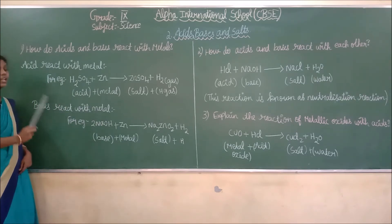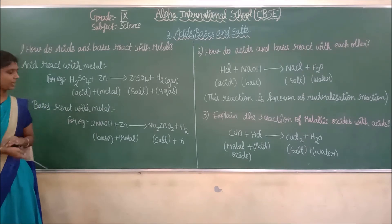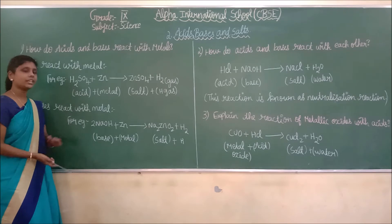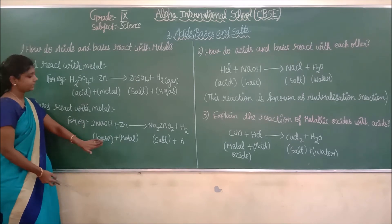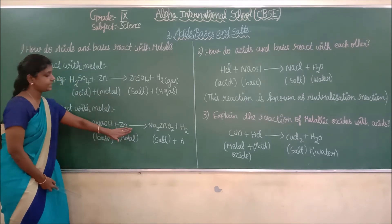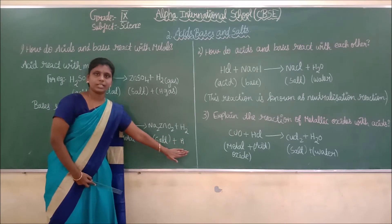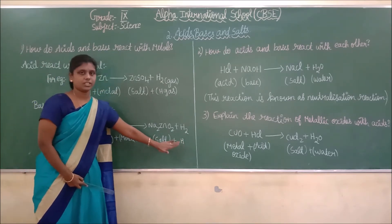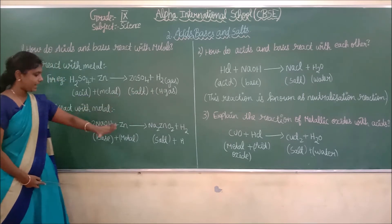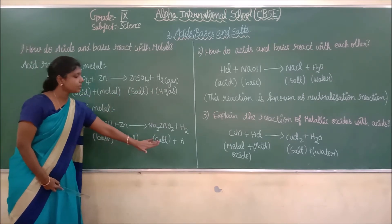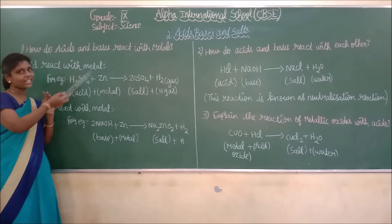When a base reacts with metals: NaOH is a base because OH is present. The base reacts with a metal and gives salt plus hydrogen. So when acid reacts with metals it gives salt and hydrogen gas, and when base reacts with metals it gives salt and hydrogen.